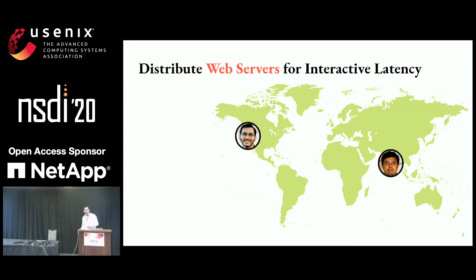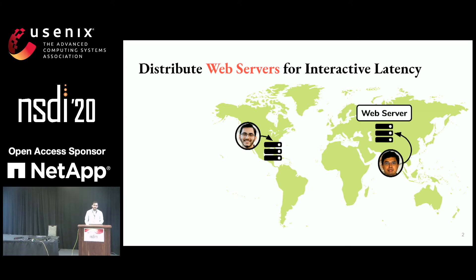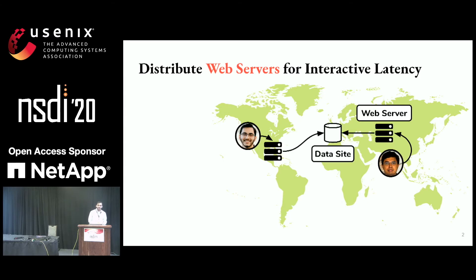To provide low latency, initially when we send a request, this should hit some nearby web server, ensuring that each of us has low latency when accessing the website. But eventually the request is going to have to hit some shared storage service, because we want to collaborate on the same document.